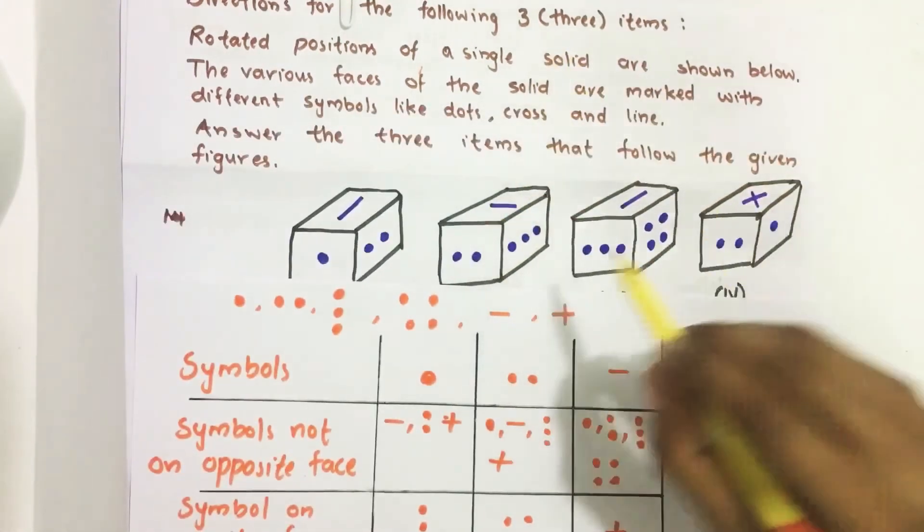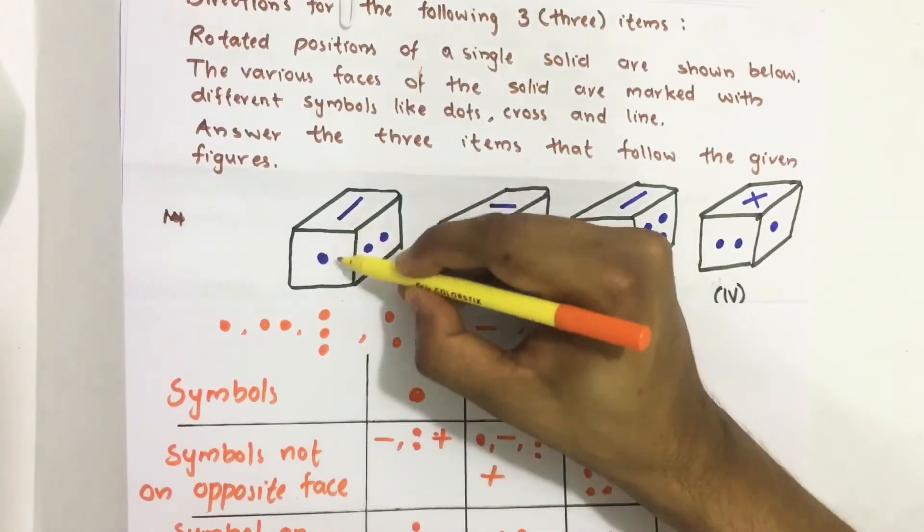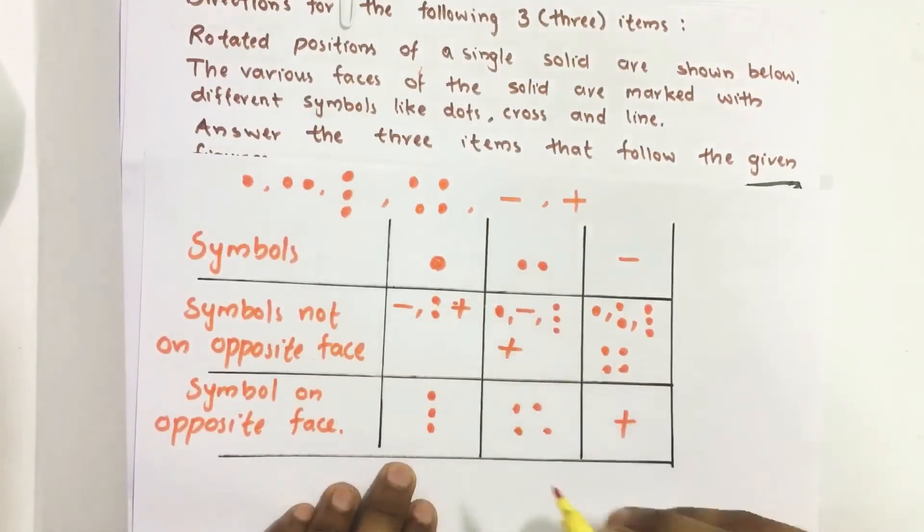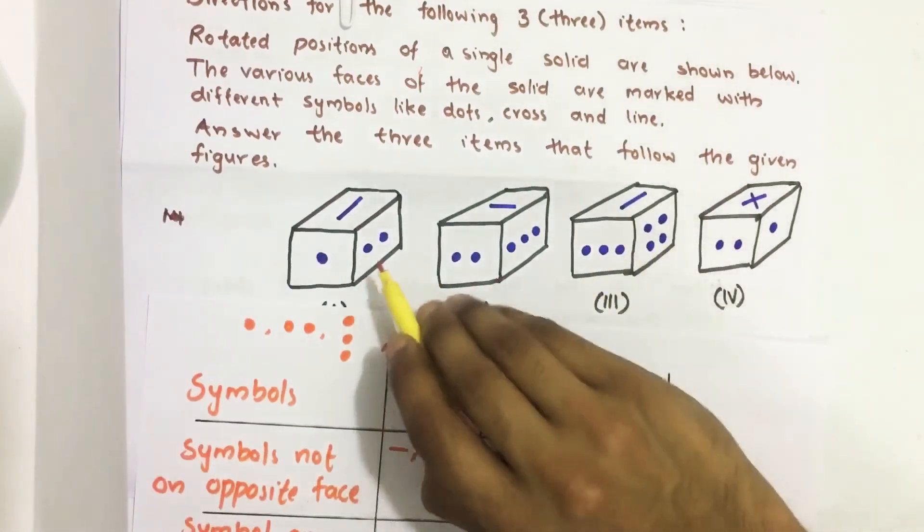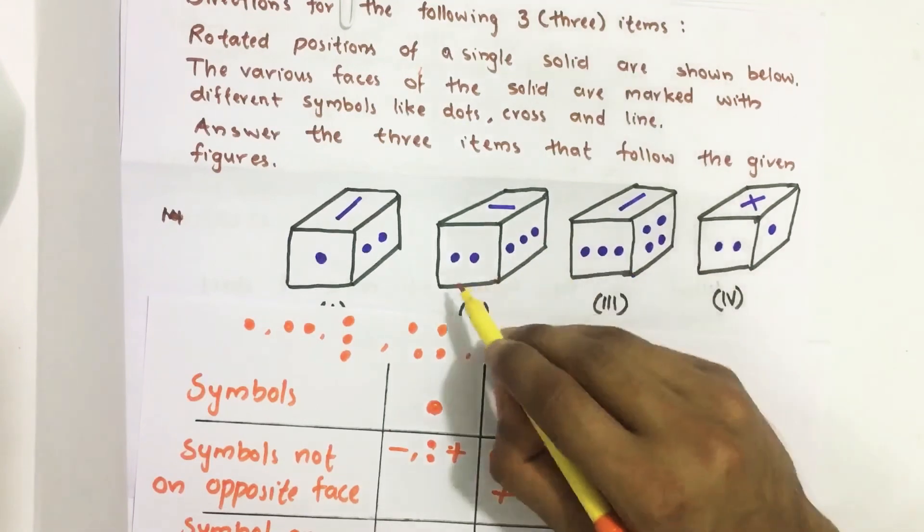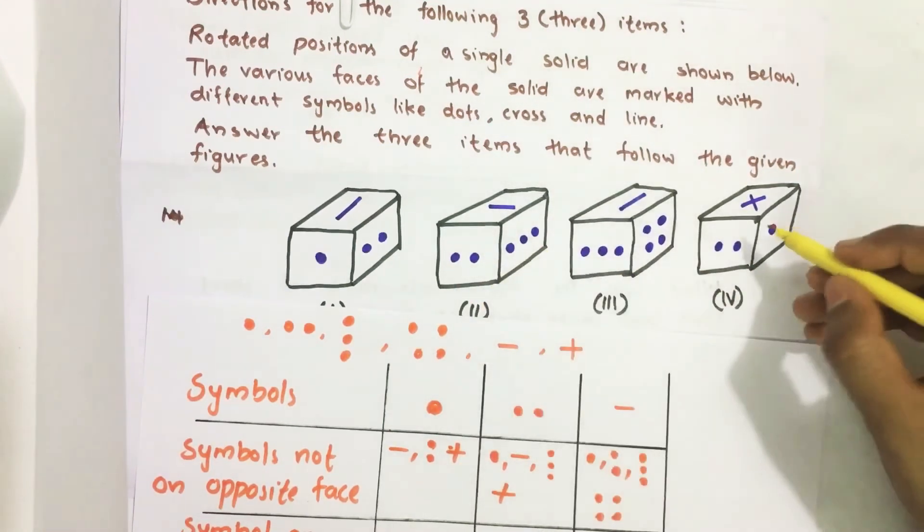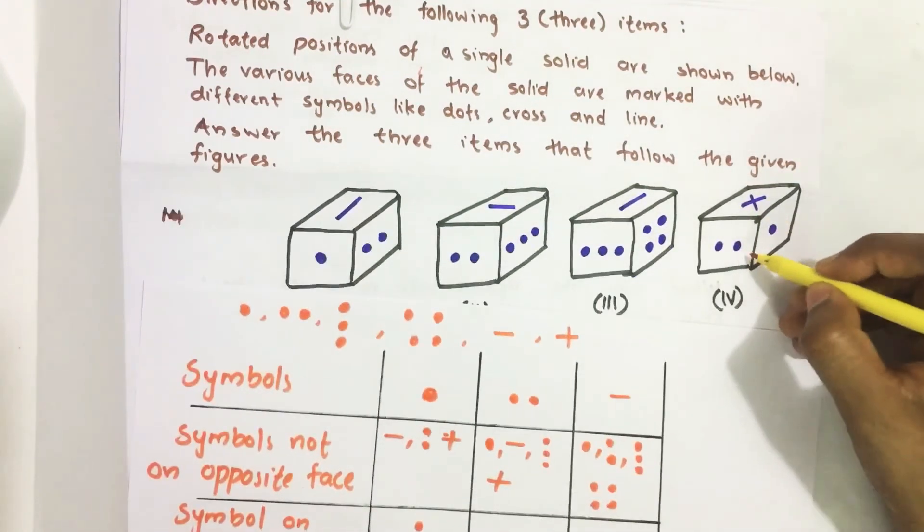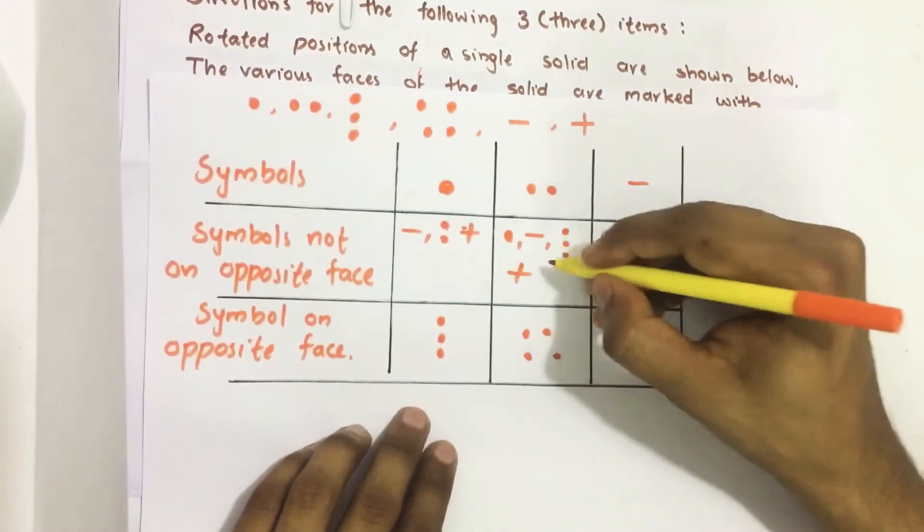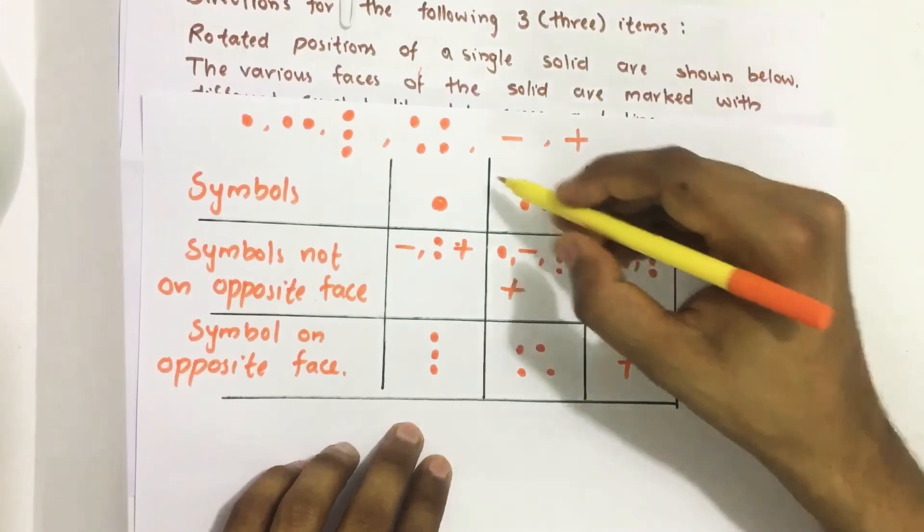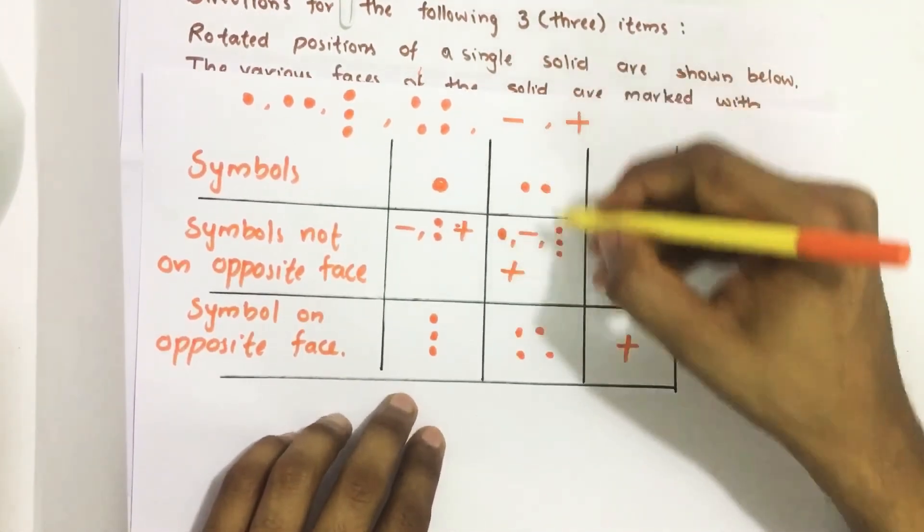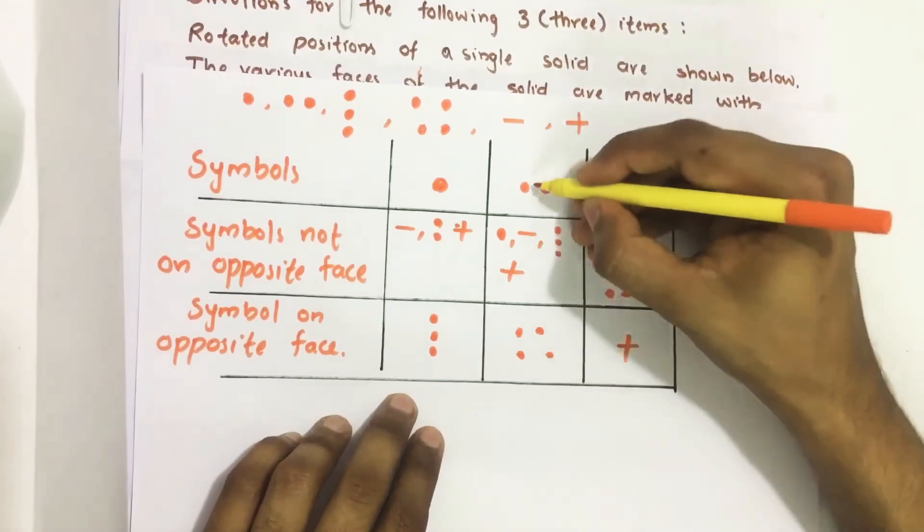Now let's consider the double dot. From first figure, line and single dot are not on the opposite face. But it is on the adjacent face. From second figure, triple dot also not on the opposite face. Similarly from the fourth figure, cross also not on the opposite face. Then the only remaining symbol is four dot. So we can conclude that which is on the opposite face of this double dot.